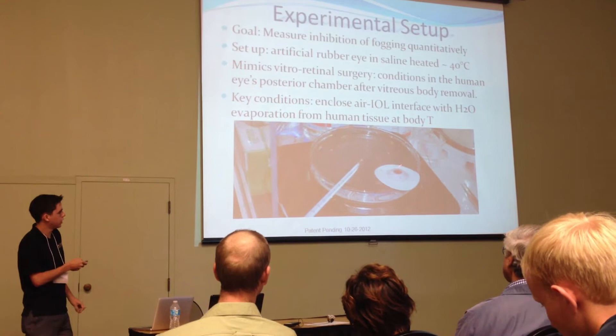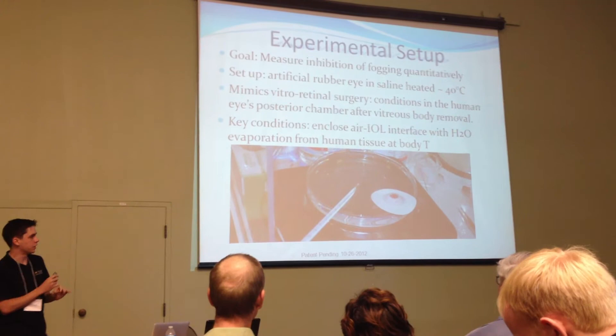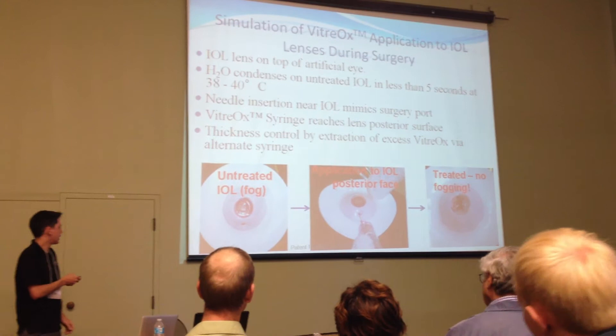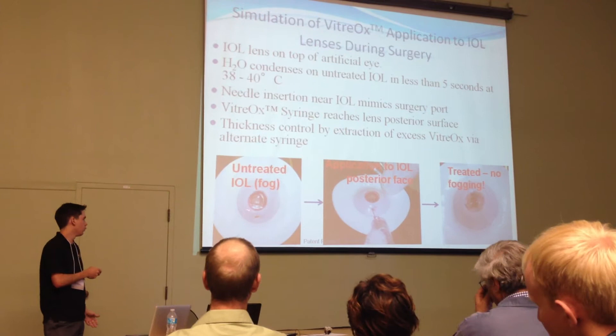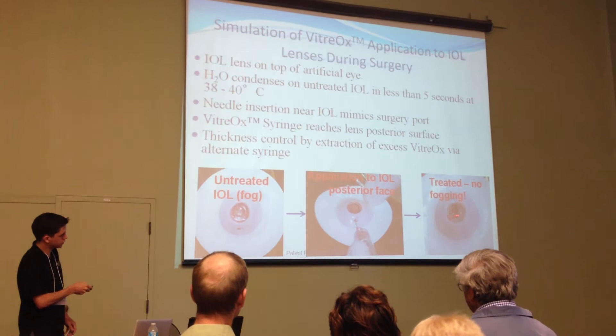We apply Vitriox using a curved syringe to the underside of the lens. With buildup of the Vitriox, and then with removal of the excess Vitriox, only the 2D film is left behind that spreads out our water droplets. This is where a surgeon would normally have to stop the surgery and wipe the lens. Once we've applied the Vitriox to the eyewell, the fogging doesn't occur on the lens where Vitriox has been applied, and surgery can continue.